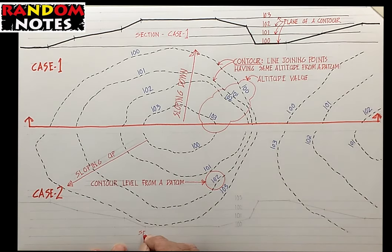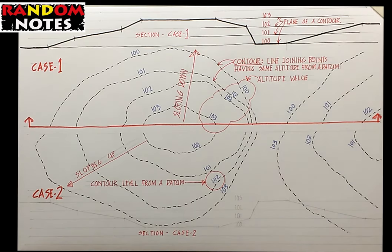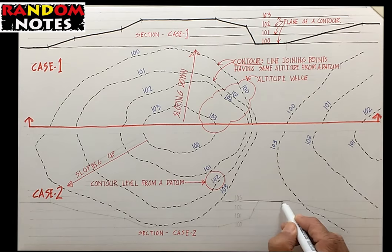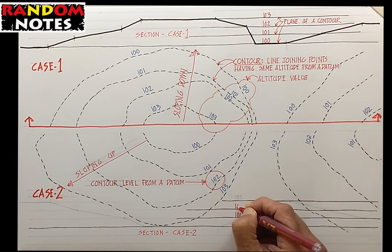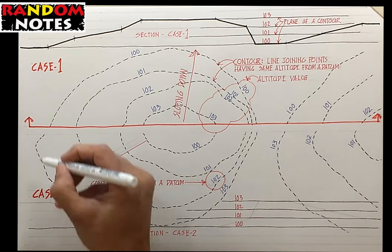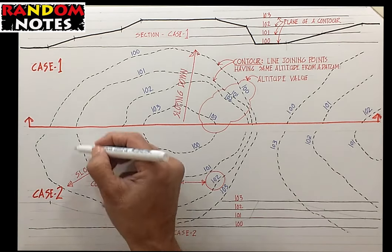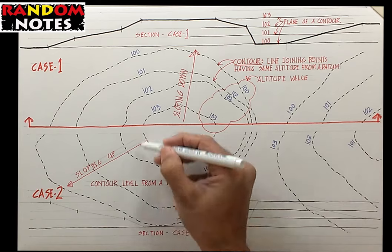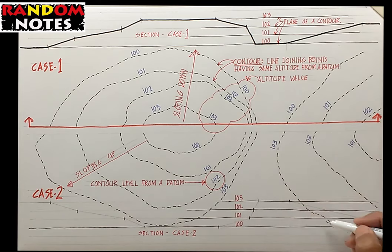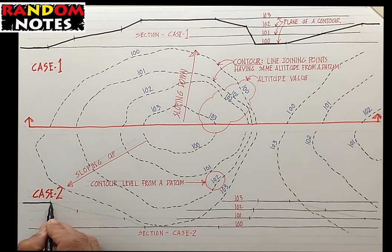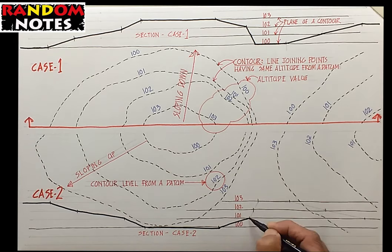This is the profile of land derived by joining these points. Let us do a similar exercise for case 2 where the slope is reverse. These are the lines of planes for each level from 100 to 103. Let us take projections downwards from points where the contour is cut by the section plane. Similar to case 1, we get the profile of land across the section plane.